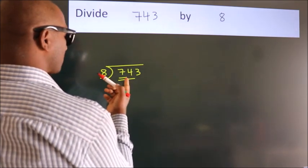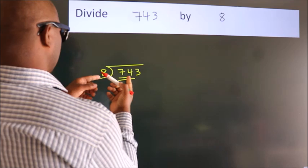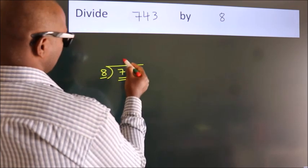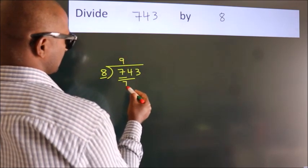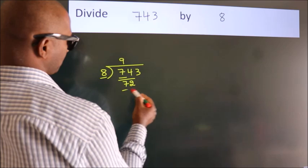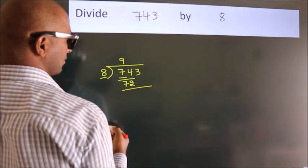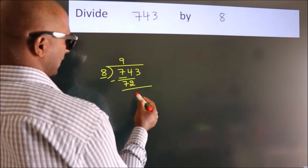A number close to 74 in the 8 table is 8 nines, 72. Now we should subtract. We get 2.